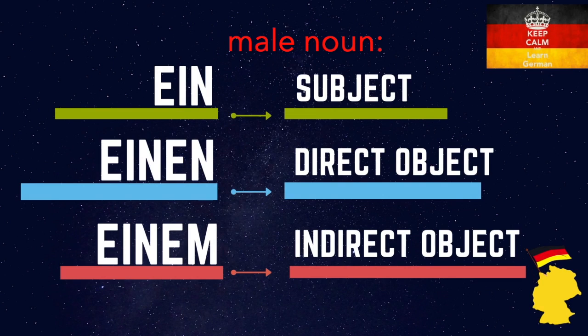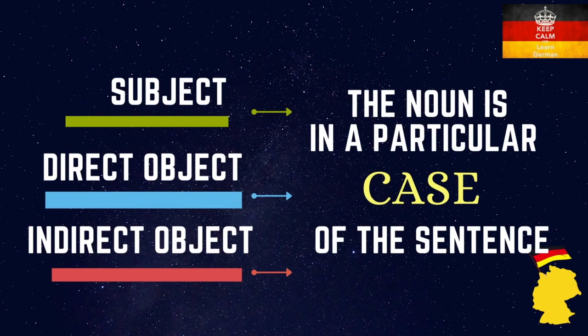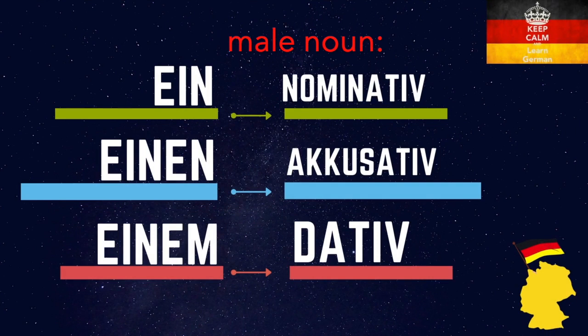Another way of saying that the noun is either a subject, direct object, or indirect object, is that the noun is in a particular case of the sentence. And here we have the dreaded words: Nominativ, Akkusativ, and Dativ. There's also a fourth case, das Genitiv, but we're going to look at that in another clip. So for our three words, you use ein for the male noun in the Nominativ case, einen for the male noun in the Akkusativ case, and einem for the male noun in the Dativ case. And this sounds all pretty crazy, so let's look at examples.